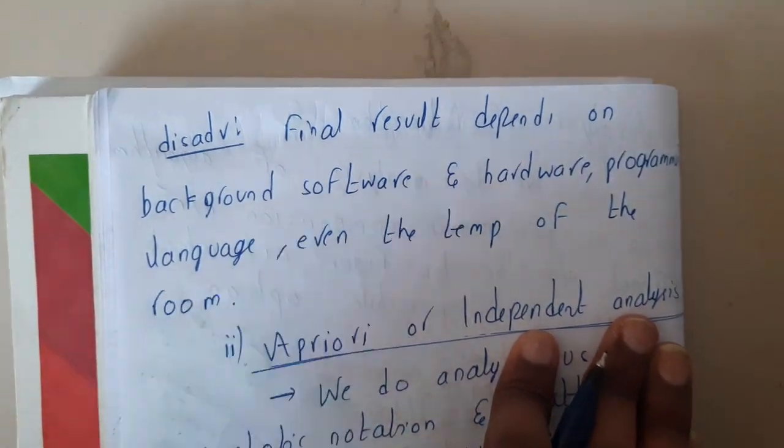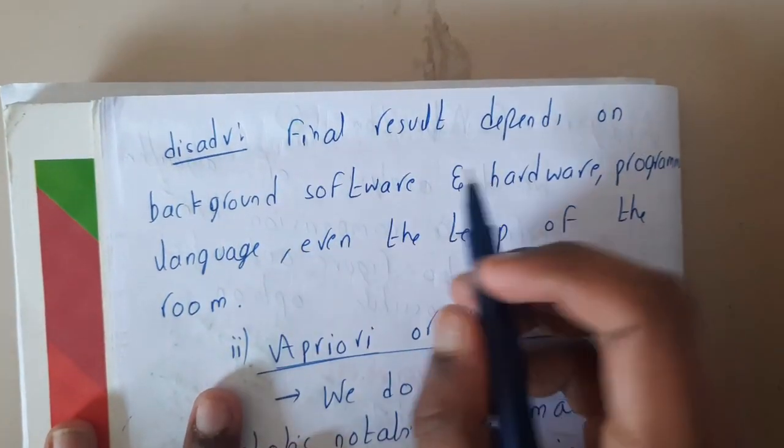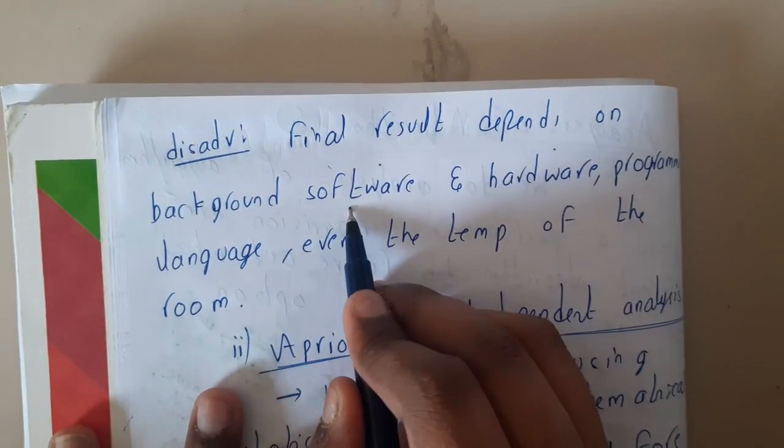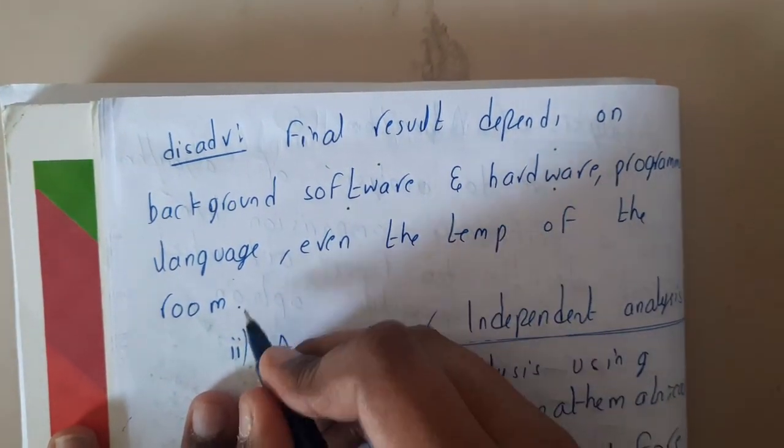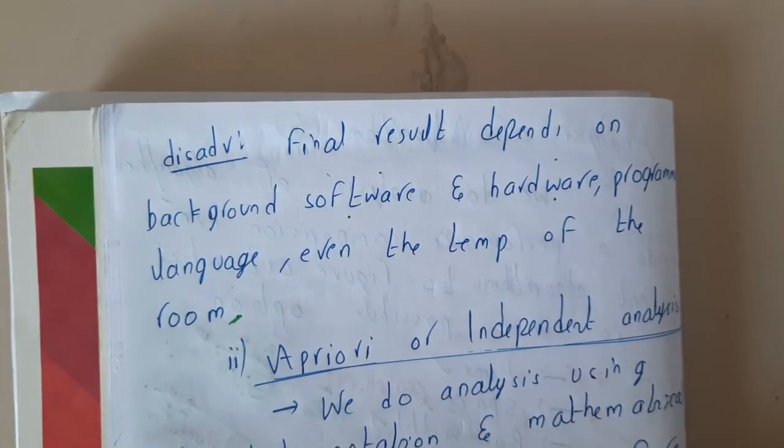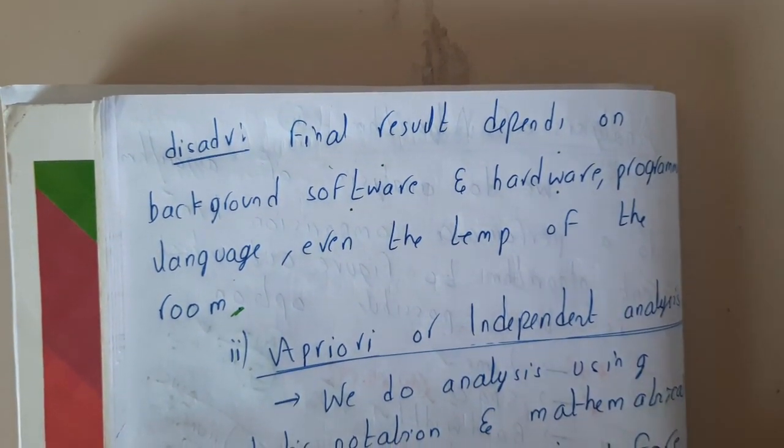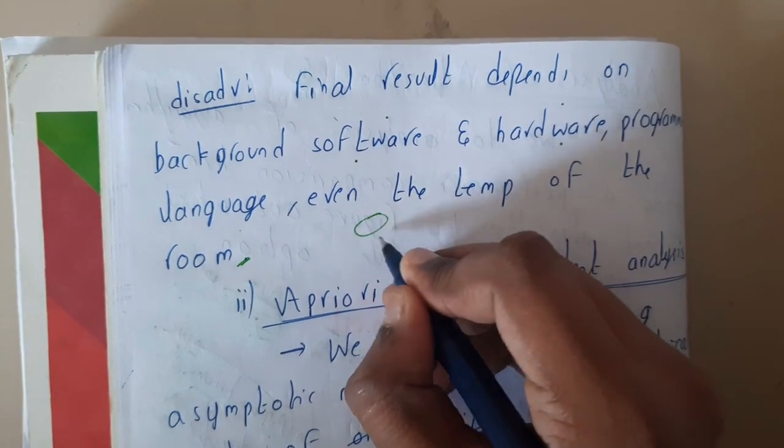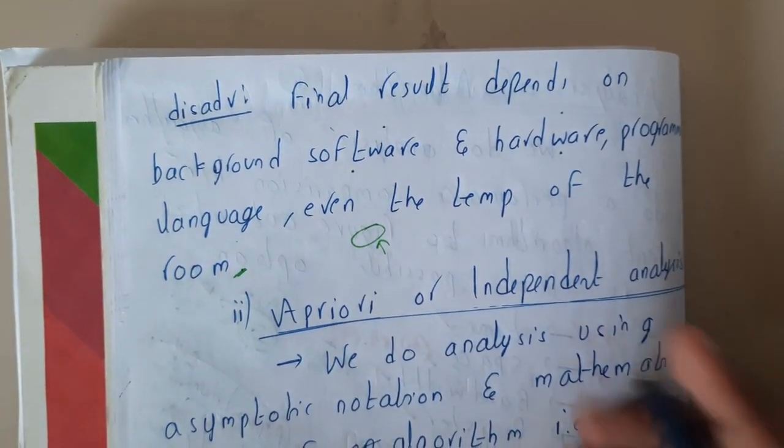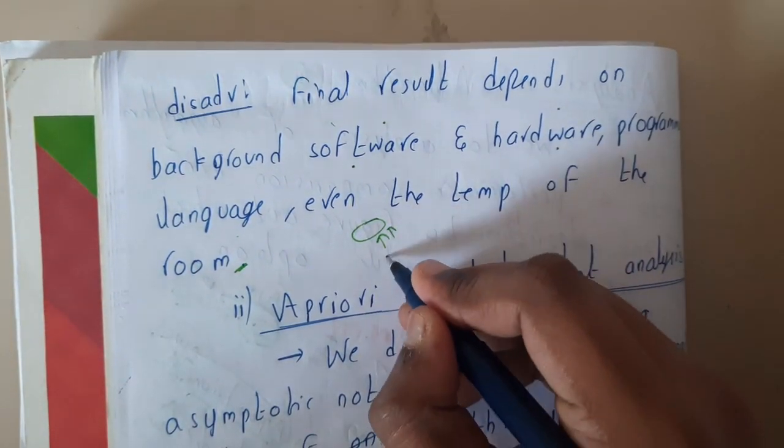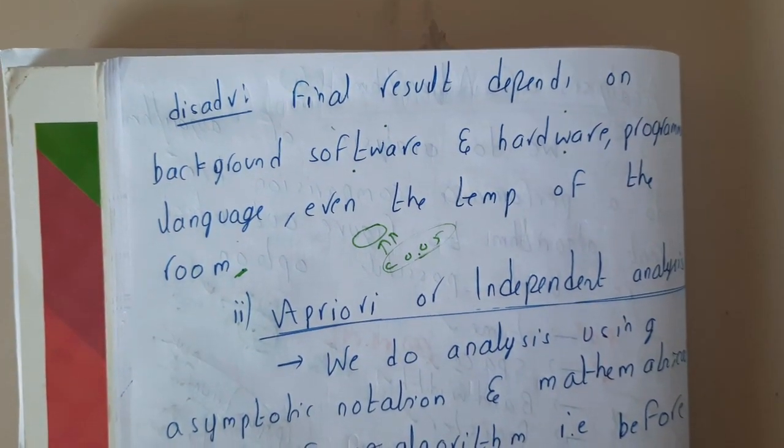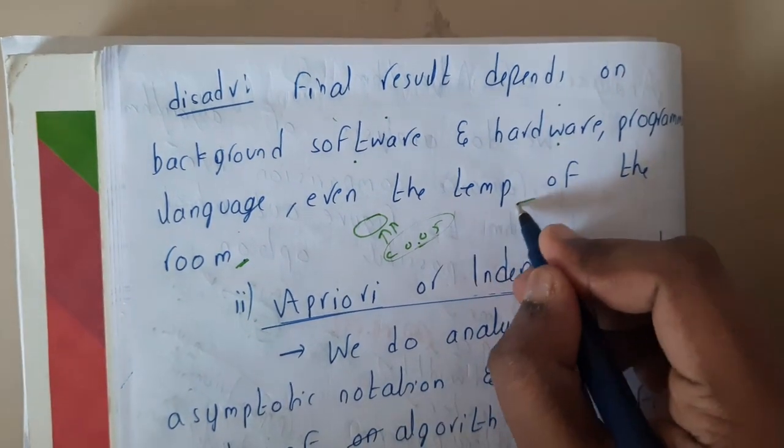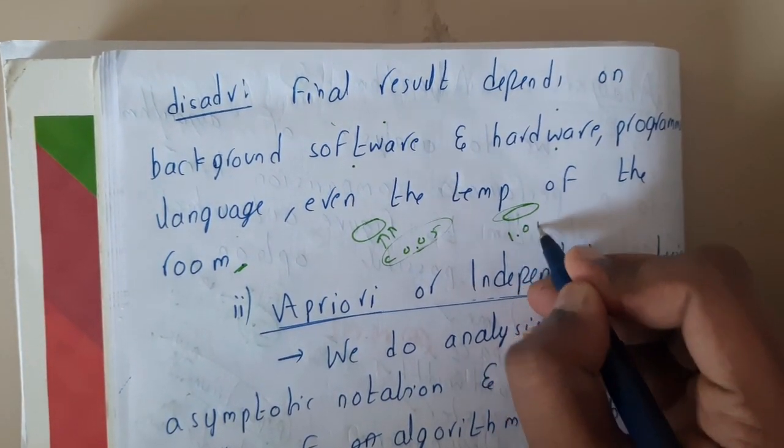Now let's go through disadvantages. The disadvantage is that the final result depends on the background software and hardware, programming language, even the temperature of the room. When you are doing these kind of experimental analysis, if your friend is having a gaming laptop or any kind of advanced laptops, those will be really fast. Even they take in 0.05 seconds, in that range of fastness they will be compiling or executing a code, whereas a normal computer takes around 1 second or 1.1 seconds.